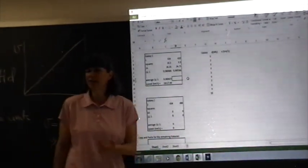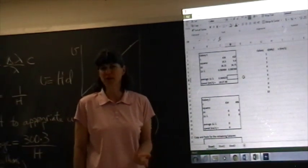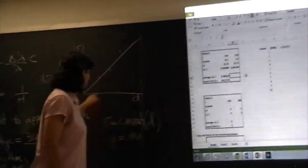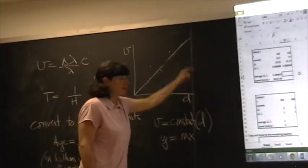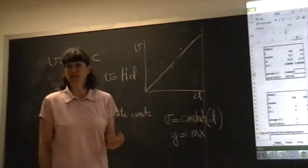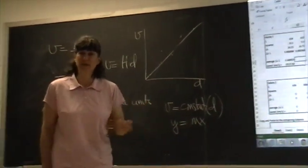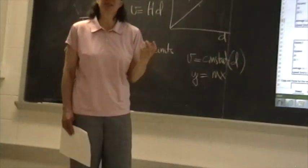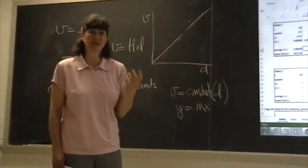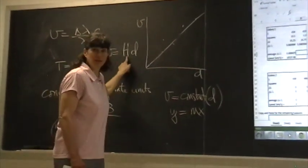Once you have all of your data collected for these 10 galaxies, then you would create a graph. The lab explains to you how you would create the graph. And once you have these points plotted in Excel, Excel can find the line that best represents those points. And just simply by looking at the equation of the line, you can get the value for this constant.